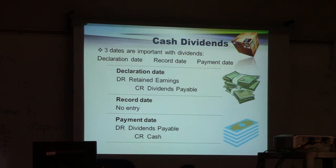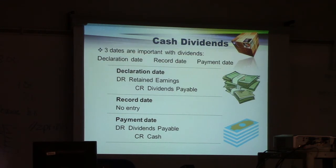So these three dates are critical, and two of them have journal entries while one does not. Declaration date: debit retained earnings, credit dividends payable. Record date: no journal entry. Payment date: debit dividends payable, credit cash.